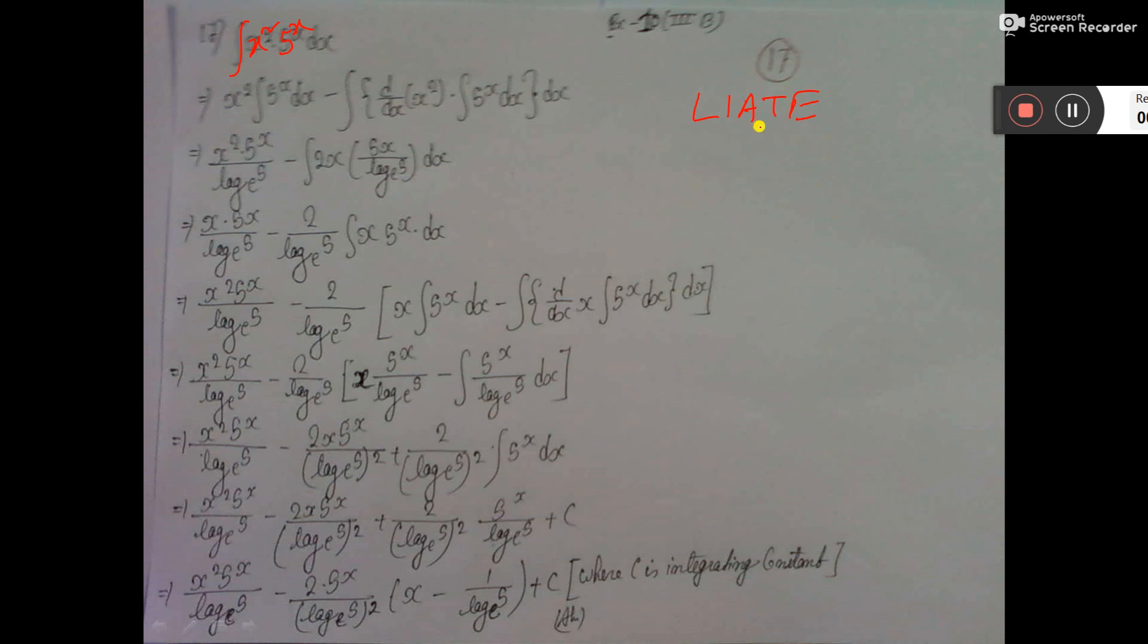Exponent and algebra. So this one will be u, this one v. So, the formula is u integration v dx minus d dx of u integration v dx total dx.